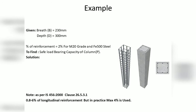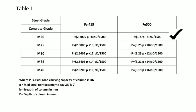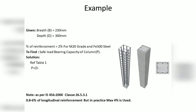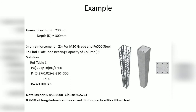Referring to Table 1 for M20 grade concrete and FE500 steel, the Safe Load Bearing Capacity formula gives: P = 3.27 × small p + 8 × B × D / 1500. Substituting the values, P is equal to 371 kilonewtons.